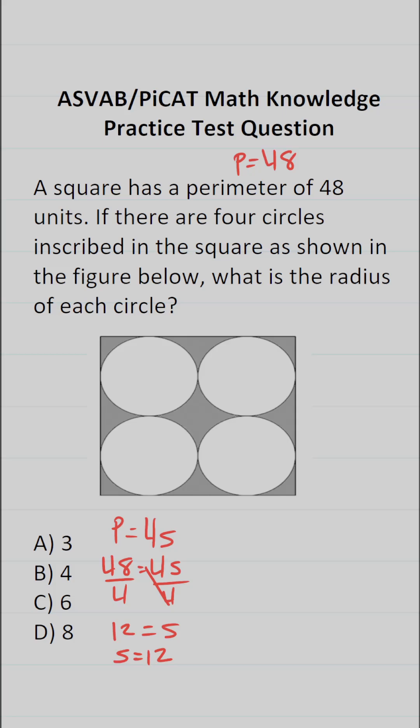In other words, I know the side length of this square is 12, and in squares, all the sides are equal. So this side is equal to this side, which is equal to this side, which is equal to this side, and these are all 12.